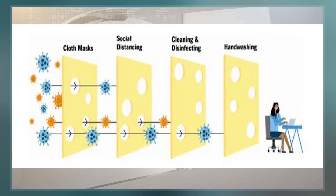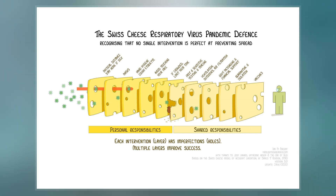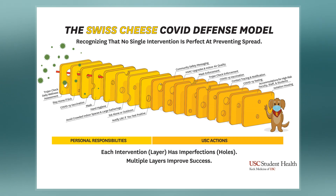The model was originally formally propounded by James T. Reason of the University of Manchester and has since gained widespread acceptance. It is sometimes called the cumulative act effect.